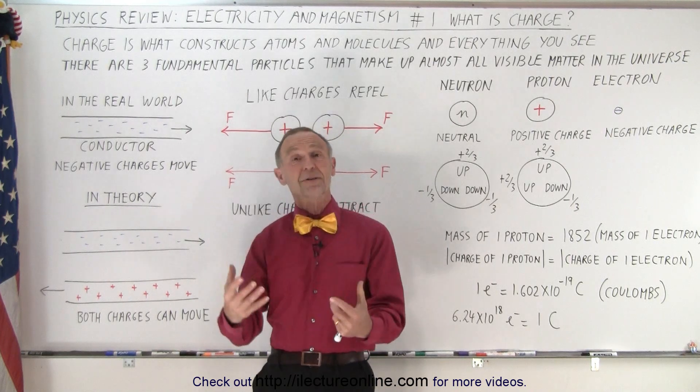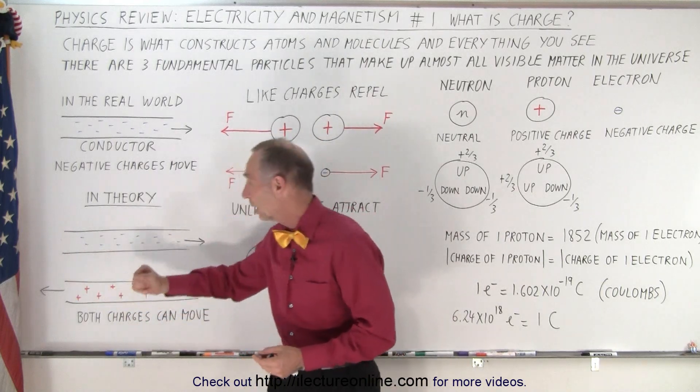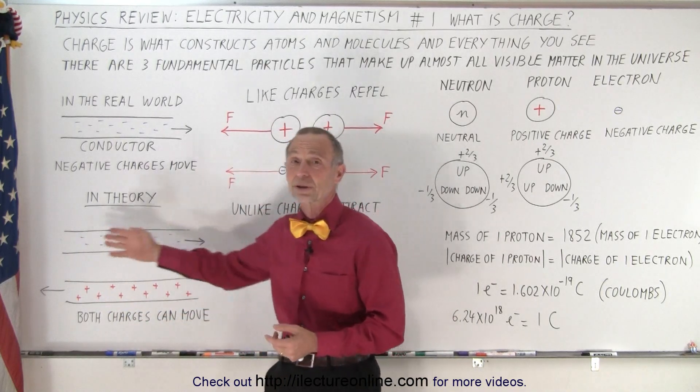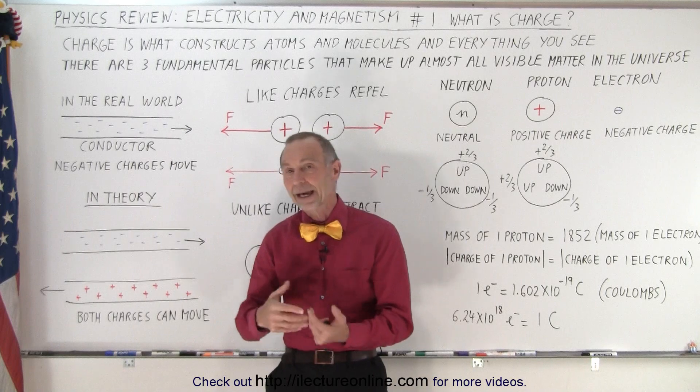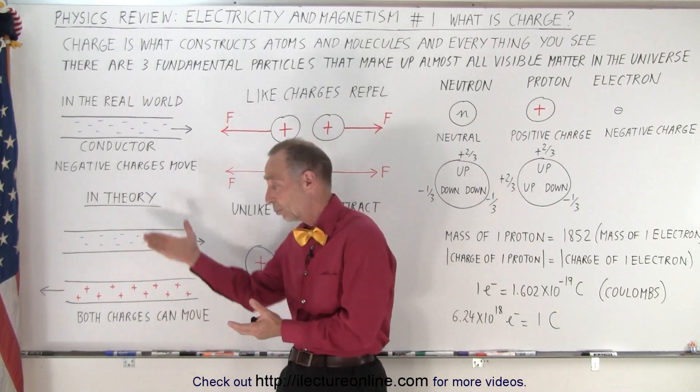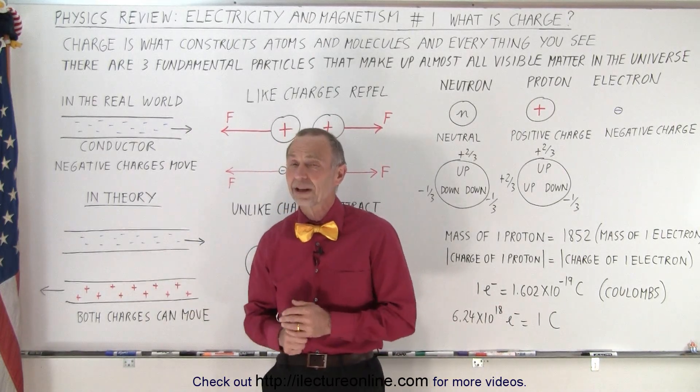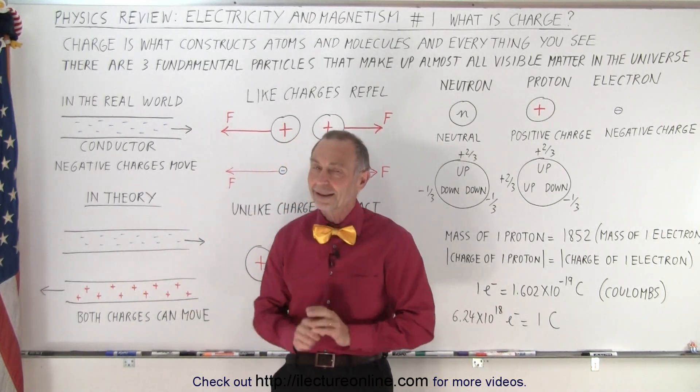But we've kept the convention. So now we can say that we can have positive charges moving through a conductor, and we can have negative charges moving through a conductor in theory. And all the equations and everything that we learned about electricity and magnetism will follow those rules that positive charges can move as well as negative charges, even though we know in the real world that's not the case.